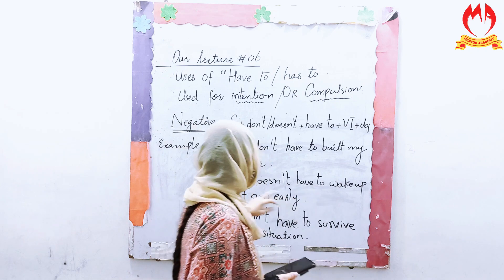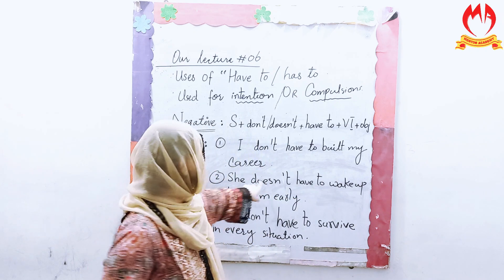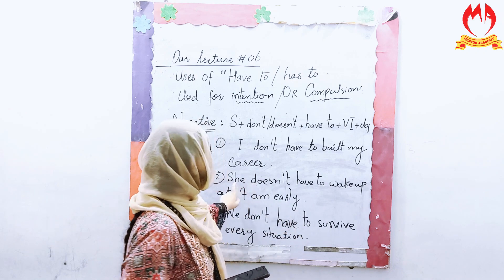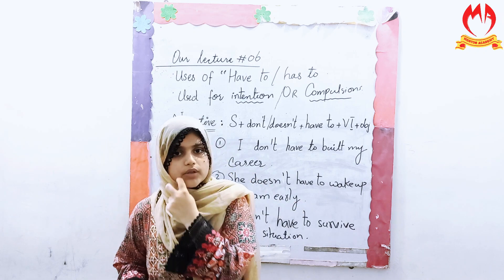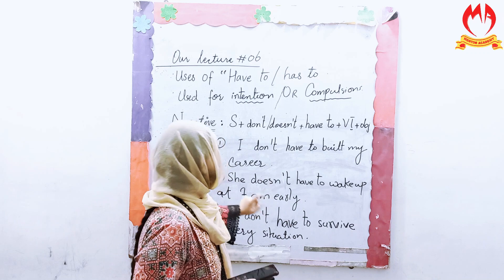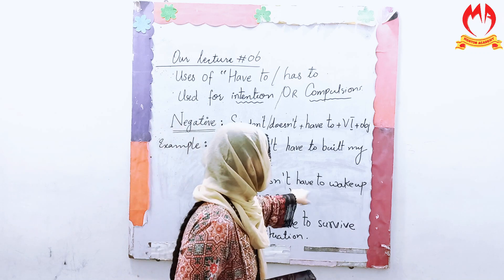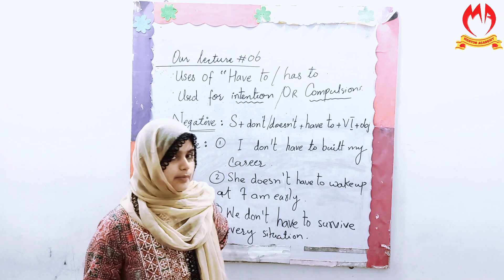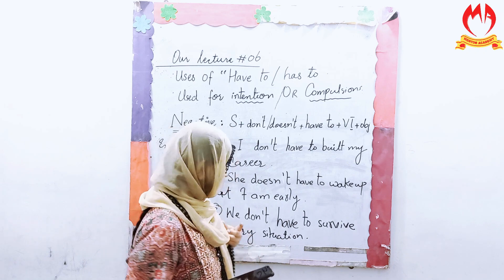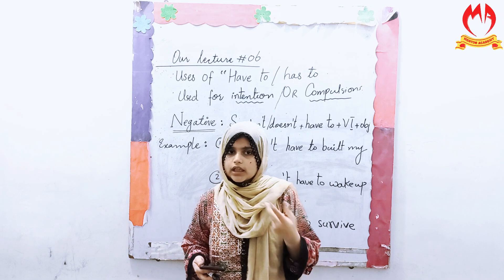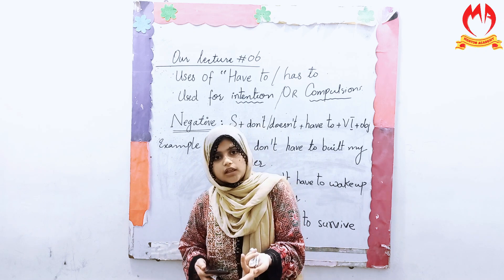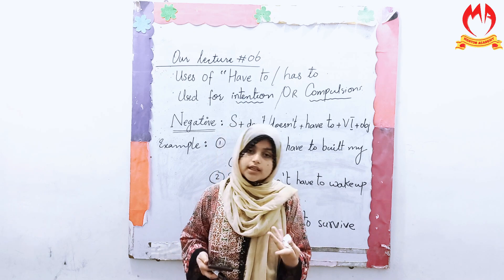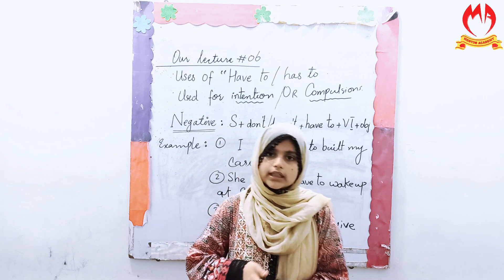And then: 'She does not have to wake up at 7 a.m.' We use 'does not' with 'she' because with a singular subject, 'does not' is always used — that is the reason we say 'she does not have to wake up at 7 a.m.' And the last negative example is: 'We don't have to survive in every situation' — meaning it is not compulsory for us to survive in every situation. This is the negative or denial form.